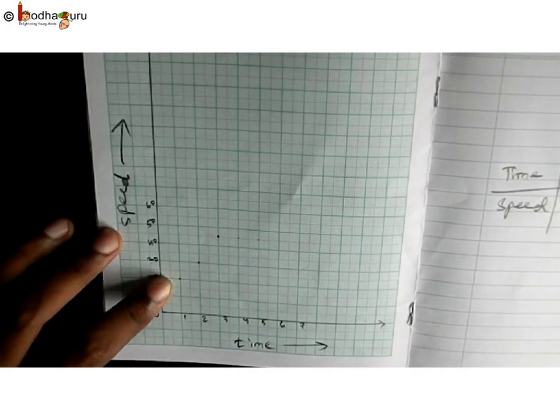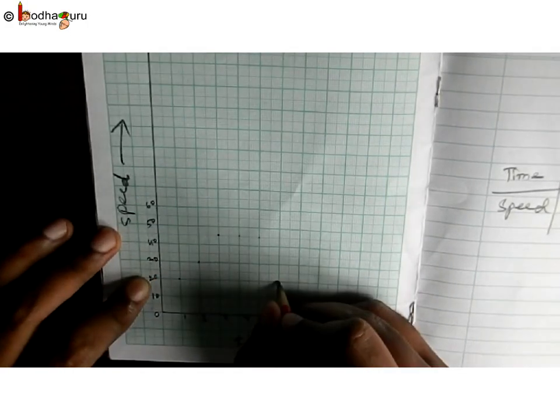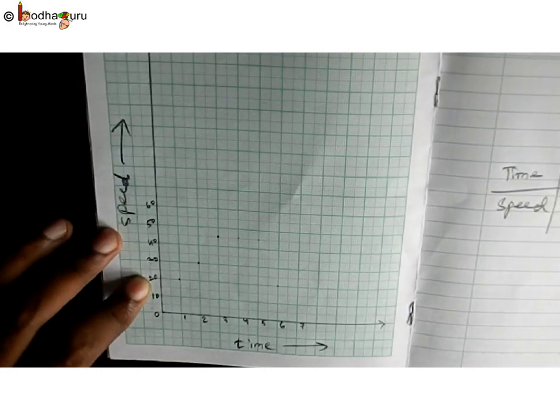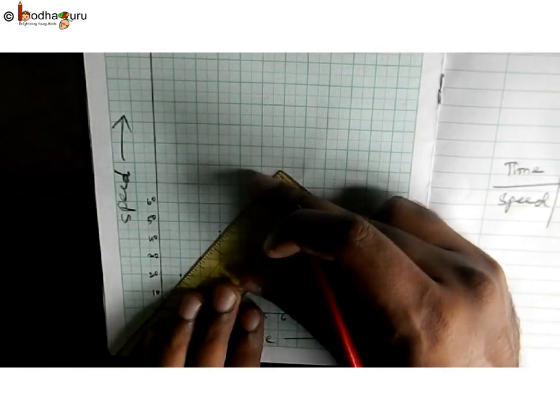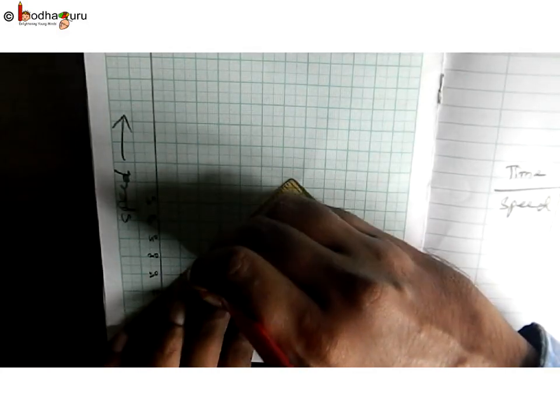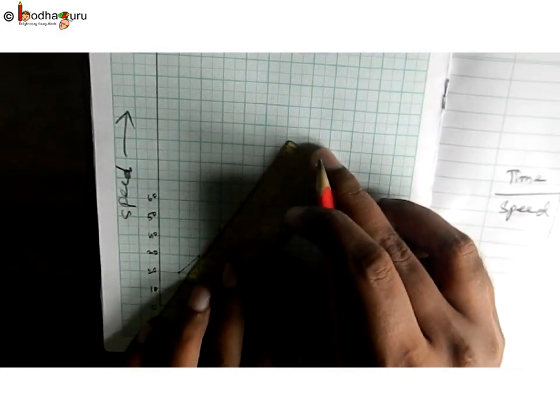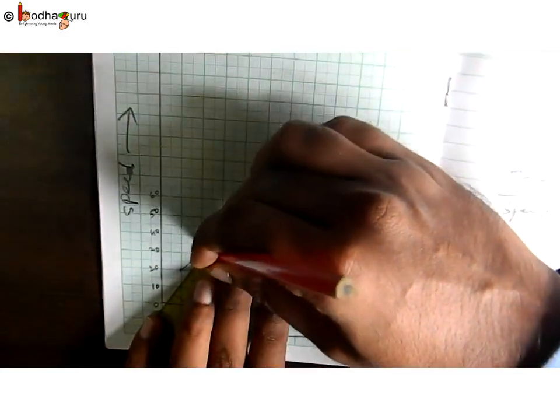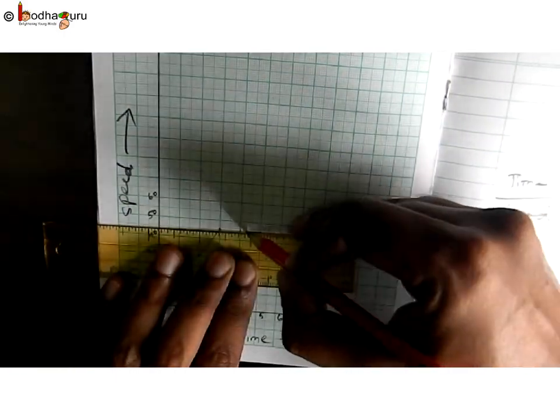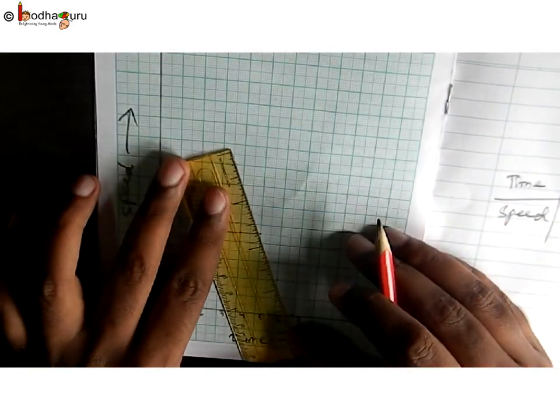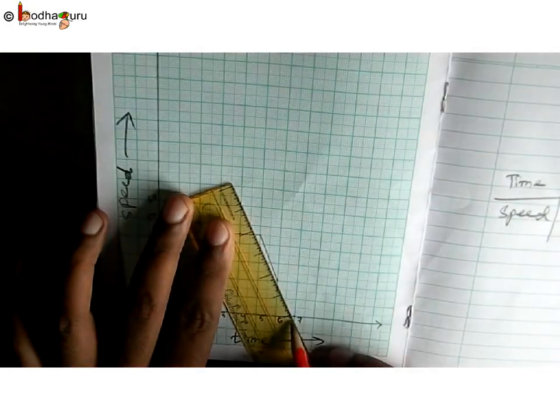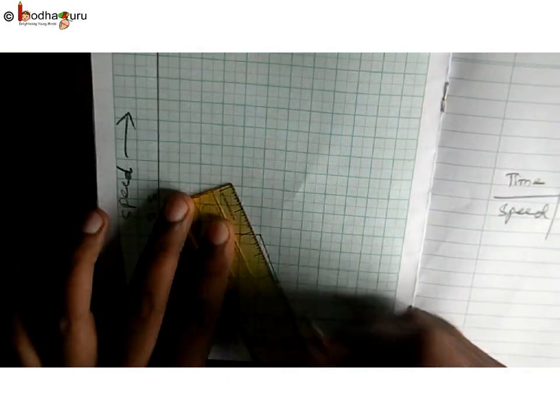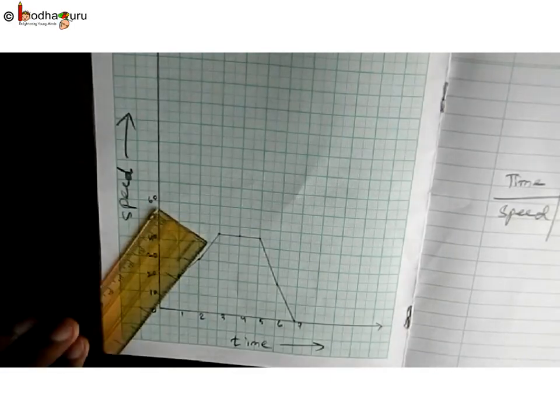We join first point with point (0,0). Meaning, the point at which the x-axis and the y-axis meet. Why? Because, train started from 0 and the start time count was 0. So, we start the graph from the point (0,0) where the x and the y-axis meet.